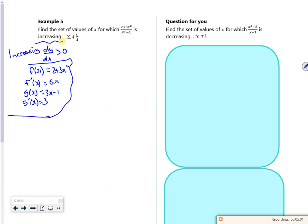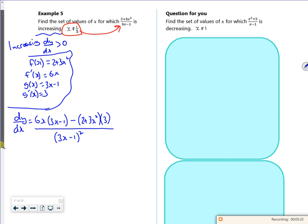So dy by dx is 6x times 3x minus 1 minus f of x, which is 2 plus 3x squared times 3, over the bottom bit, 3x minus 1 all squared. Have you noticed I put that in there? x not equal to a third. That's because I made the bottom equal to 0, and that's where the asymptote is.